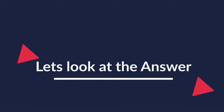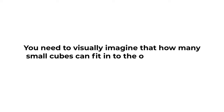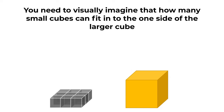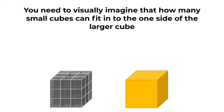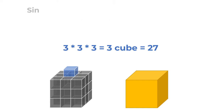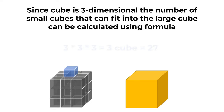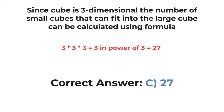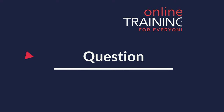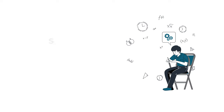To solve this, visually imagine how many small cubes fit on one side of the larger cube — three small cubes fit on each side. Since the cube is three-dimensional, the total is 3 × 3 × 3 = 3³ = 27. The correct choice is C: 27.